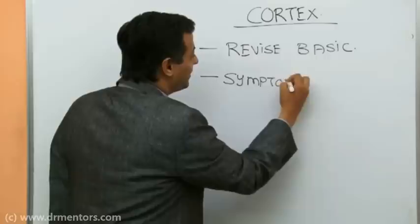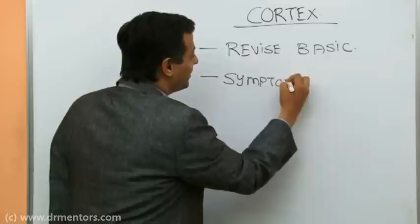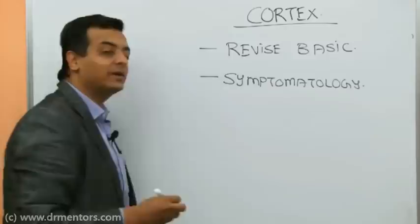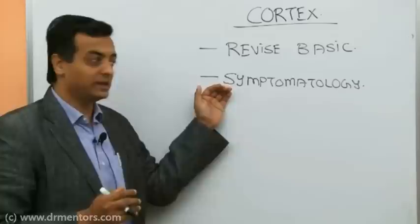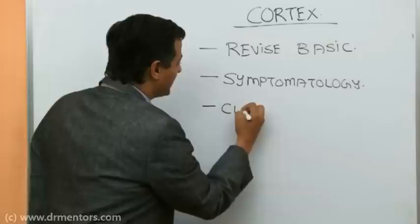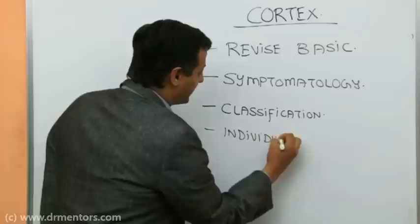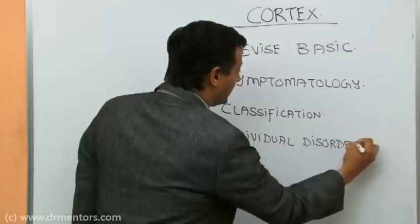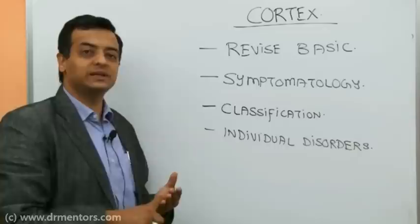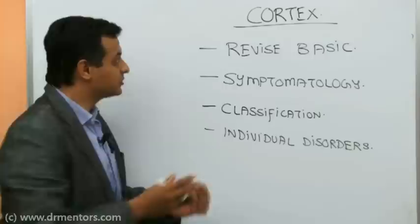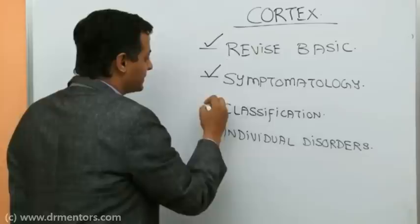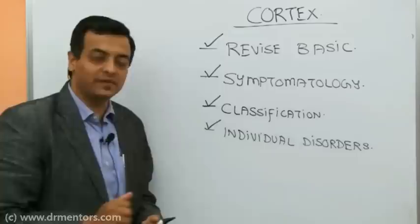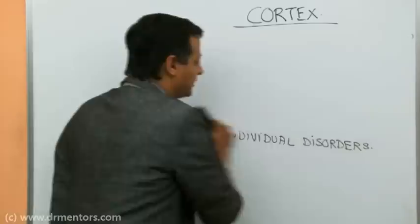In our CNS class, for every disease we will follow this order: first revise basic anatomy and physiology, then do symptomatology — the bridge between theory and clinical medicine — followed by classification, and finally discuss individual disorders of the cortex: CVA, epilepsy, multiple sclerosis, headache, and infections.